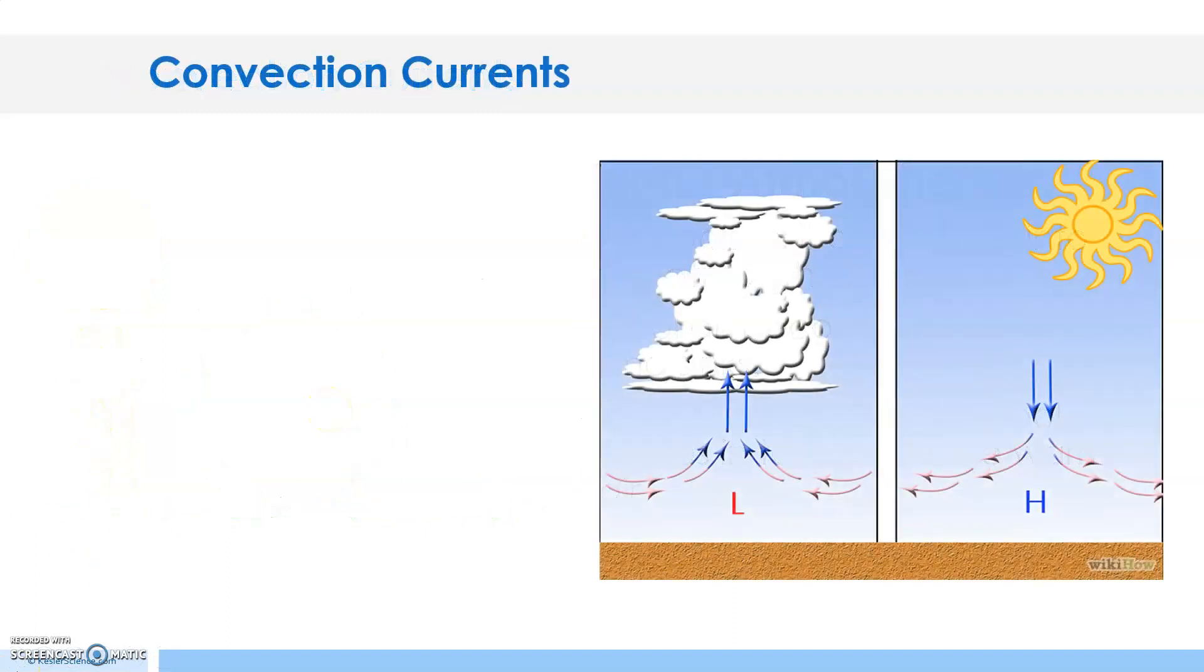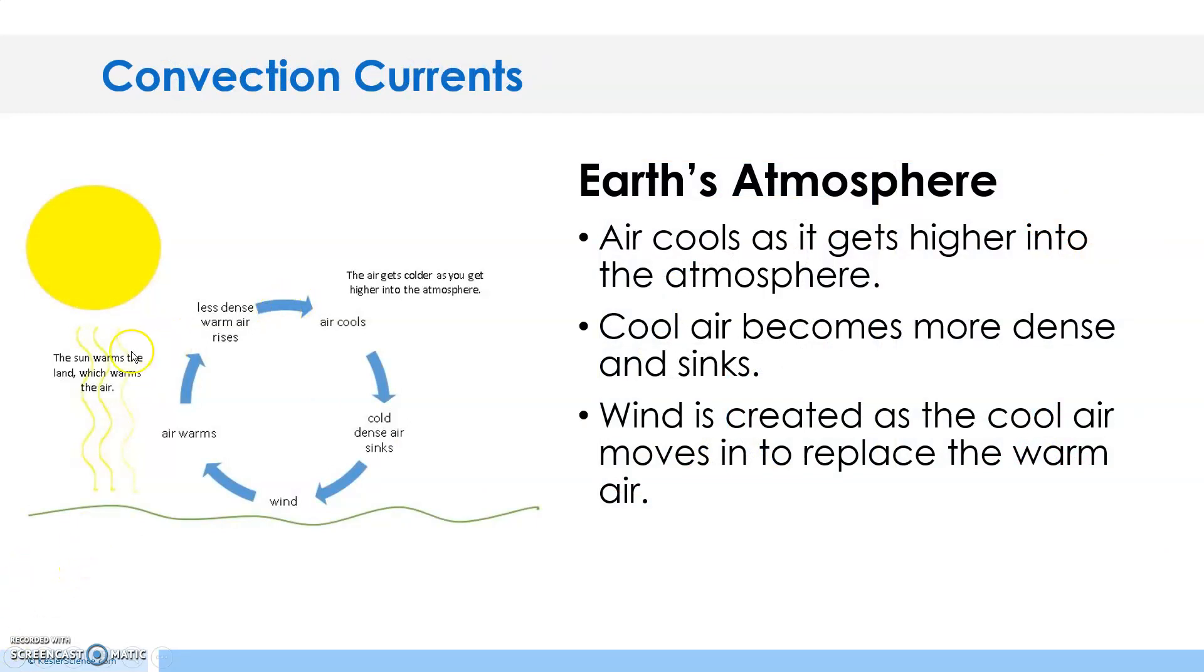Let's go back to the diagram here. The Sun warms the land, which warms the air, so that warm air is going to rise. And then once it cools off, it's going to sink. So these are our currents here.